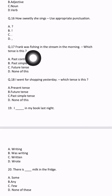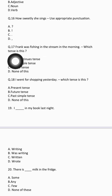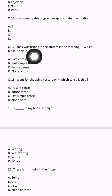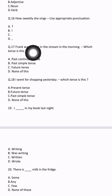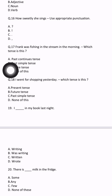Question number 17: 'Frank was fishing in the stream in the morning.' Which tense is this? Frank was fishing — 'fishing' has -ing so it is continuous tense. 'Was' is given, so it is past tense. Was fishing means it is past continuous tense. The option for past continuous tense is given. So we will select answer A.